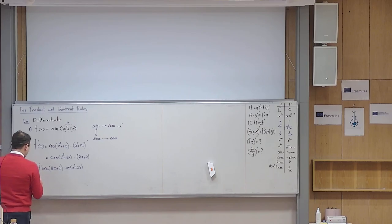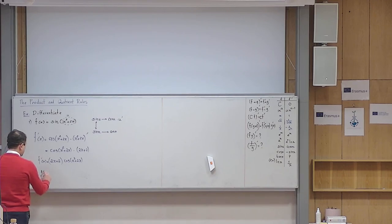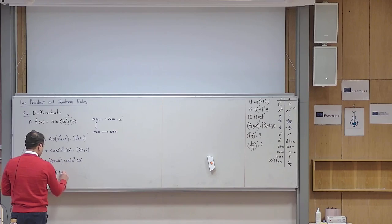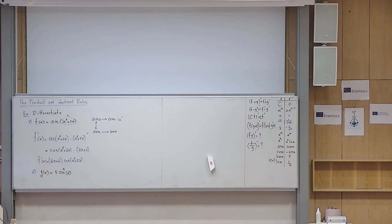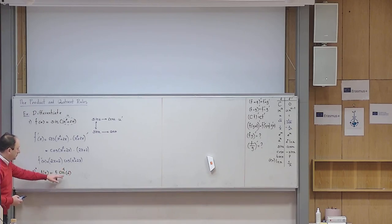Let me give another example. Number two: g(x) = 5·cos⁴(x²). I put a star here because students often get confused. The 2 is the power of x, then you raise cosine of x² to the power of 4, and then multiply by 5. That is how you read it.